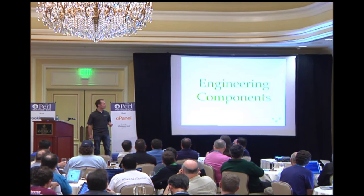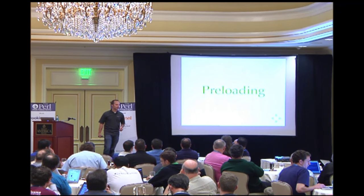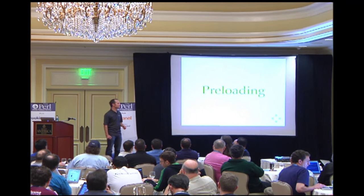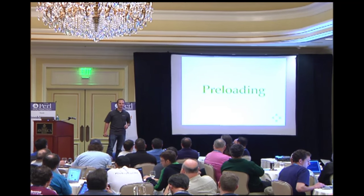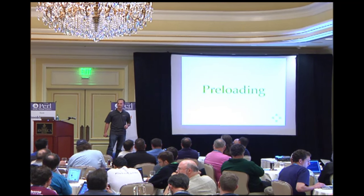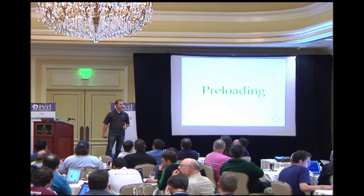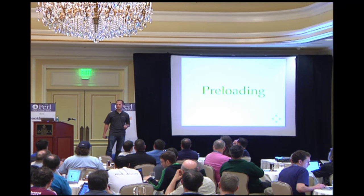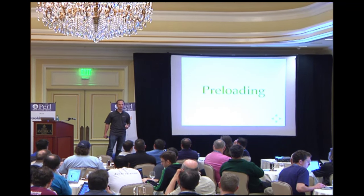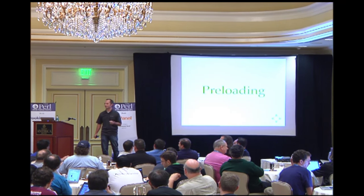There are a number of things that are part of the different components of social engineering. One is preloading — getting the conversation ready before it even starts. This is very common in advertising. Some of the things you might see in a commercial for drinks is people always partying. Just opening a drink doesn't start a party at your house or invite your friends over, but that preloads the conversation almost every time you see one of those advertisements.